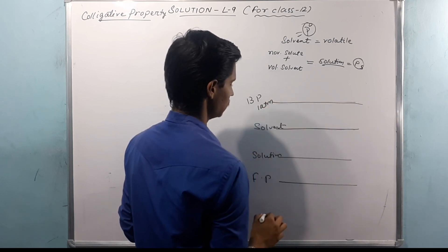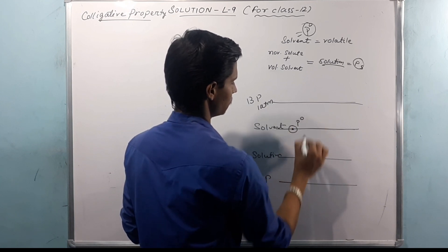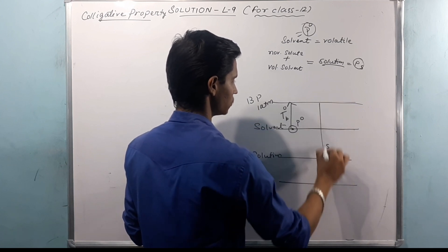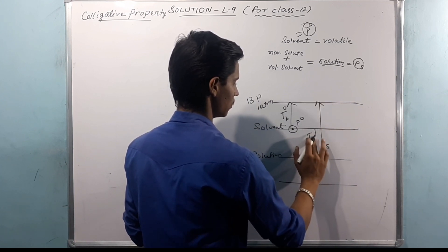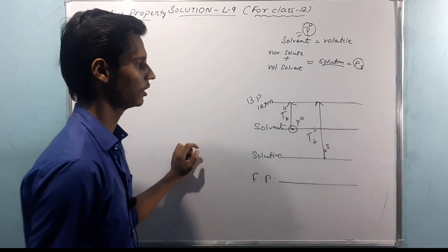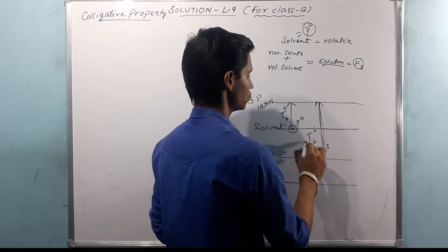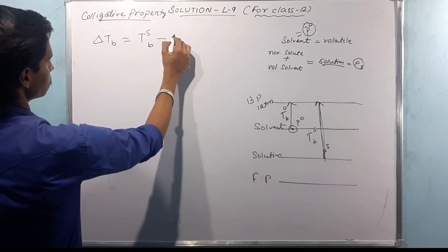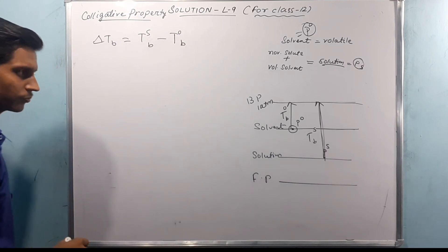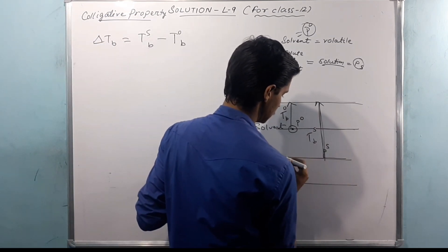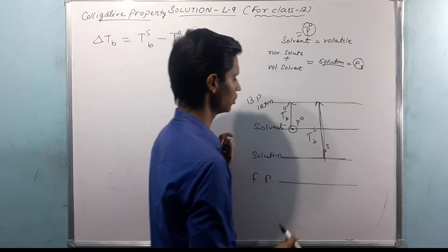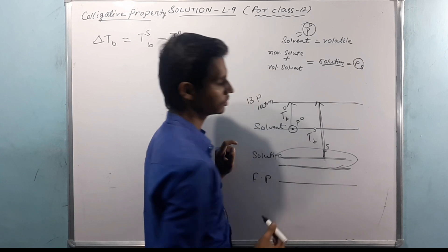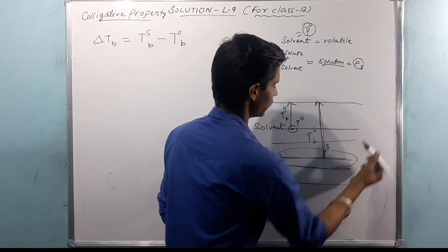The boiling point of the pure solvent is T naught B, and the boiling point of the solution is T_SB. When we add a non-volatile solute, the vapor pressure decreases, so the solution requires a higher temperature to boil. The change in temperature delta T_b equals T_SB minus T naught B. Every time we add a non-volatile solute, the pressure is less, so the boiling point elevation occurs.